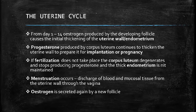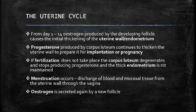Now looking at the uterine cycle — it is called the uterine cycle because it occurs inside the uterus of a female. From day 1 to day 14, estrogen produced by the developing follicle causes the initial thickening of the uterine wall or endometrium. In the ovarian cycle, the developing follicle secretes estrogen, and in the uterus this estrogen thickens the endometrium or inner lining of the uterus, preparing it for implantation or pregnancy.